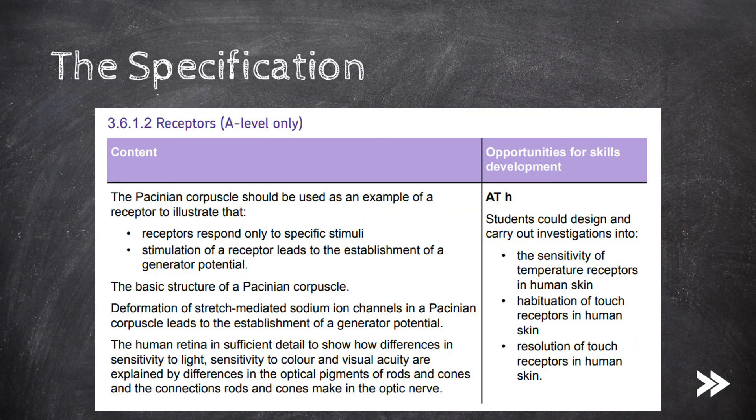Great, that would be the specification covered. We have covered the Pacinian corpuscle in terms of its structure, and have explained how a generator potential is established by the deformation of stretch-mediated sodium ion channels. In this way, we can use the Pacinian corpuscle as an example of a receptor to illustrate that receptors only respond to specific stimuli, and how a generator potential is established when a receptor is stimulated. We have also covered the human retina, and how the differences in optical pigments in rods and cones, and the different connections that they make, can be used to explain the differences in sensitivity to light, colour, and visual acuity.